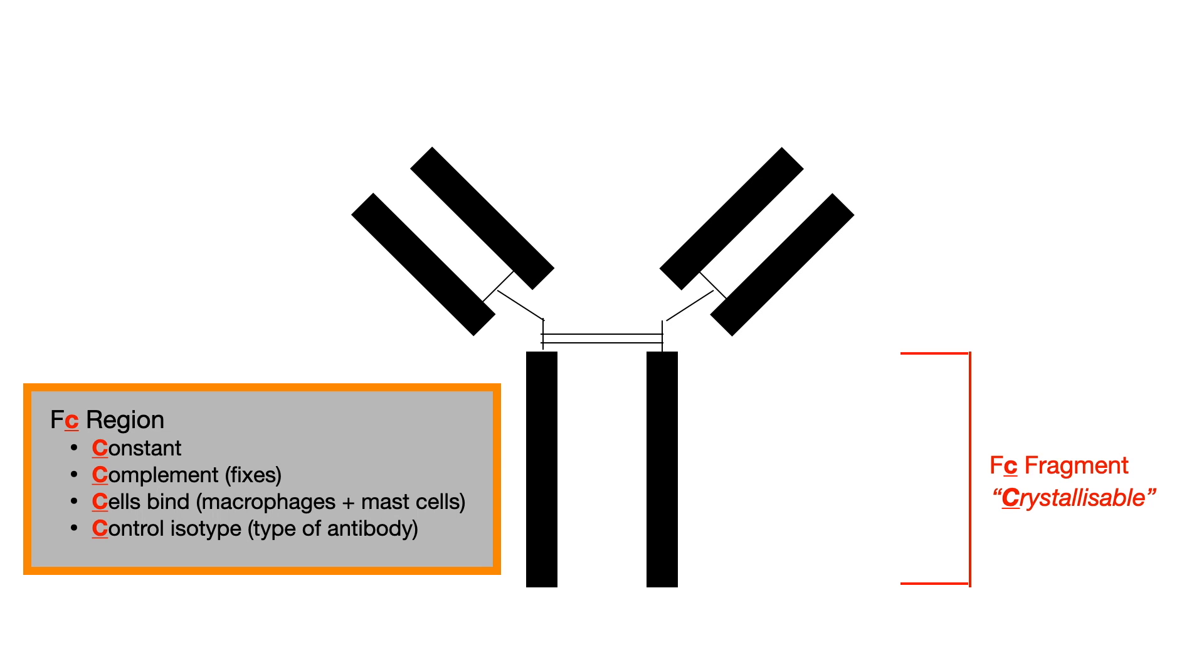It fixes complement. So, the antibody, depending on the type of antibody, is involved in fixing the complement cascade. Cells bind here, meaning that this region can be bound by macrophages and mast cells. And lastly, and probably most importantly, it controls the isotype.